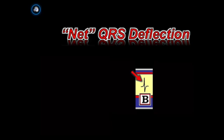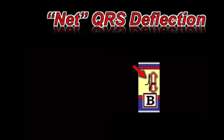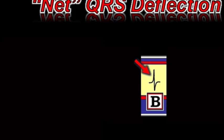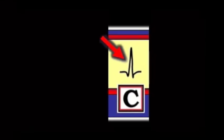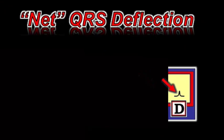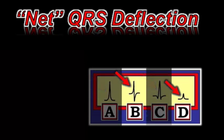By the term 'net QRS deflection,' we mentally add up the magnitude of the positive deflection and subtract any negative deflections. For example, a monophasic all-upright R wave is all positive. A positive R wave with a negative S wave is net positive if the R wave is taller than the S wave is deep. A tall R wave that clearly outweighs small Q and S waves is also net positive, as is a small R wave with no opposing negative deflection.